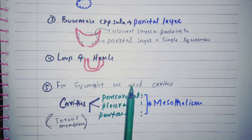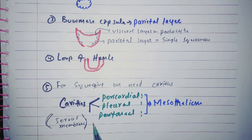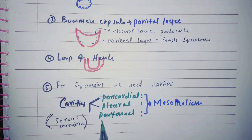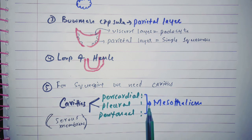Now for squeezing, for simple squeezing in our body we need the cavities and the cavities are, we can also say mediastinal cavity, thoracic cavity and abdominal cavity but here I will say like pericardial cavity, pleural cavity, peritoneal cavity. So the serous membrane of these cavities are having mesothelium and this mesothelium is actually the simple squamous epithelium.